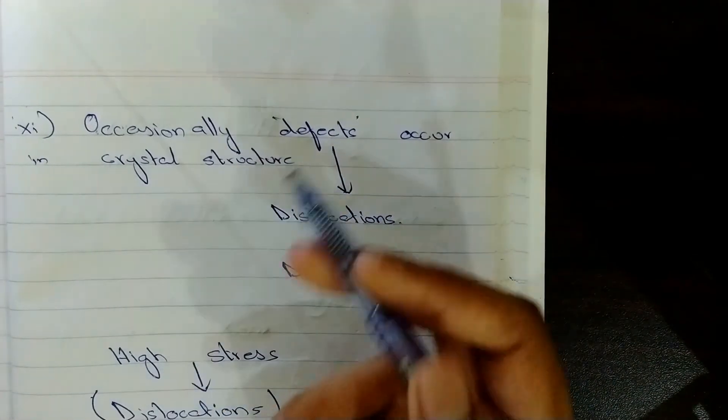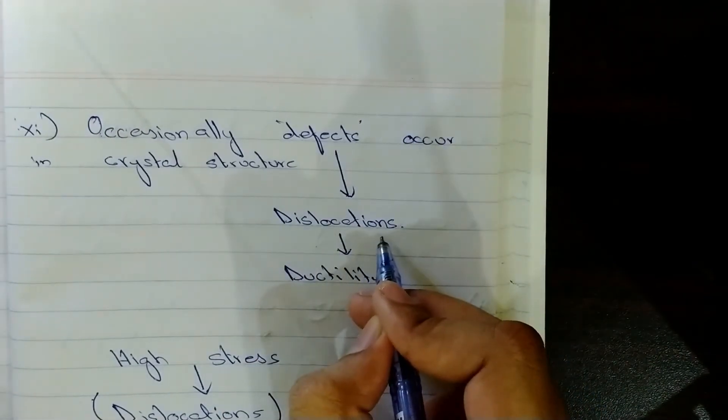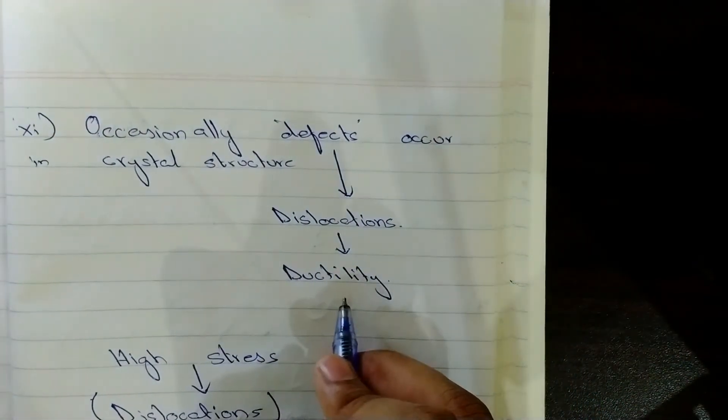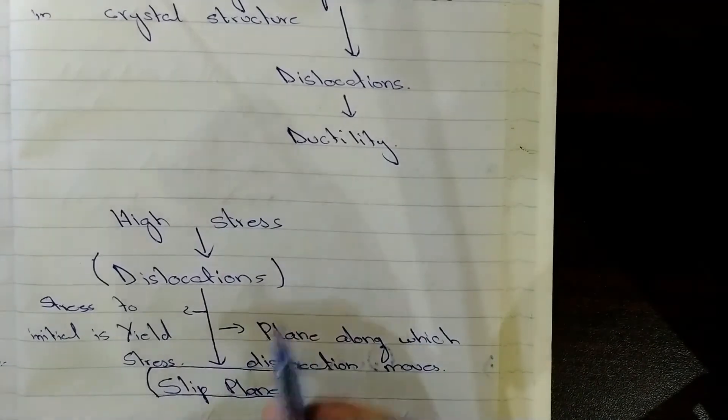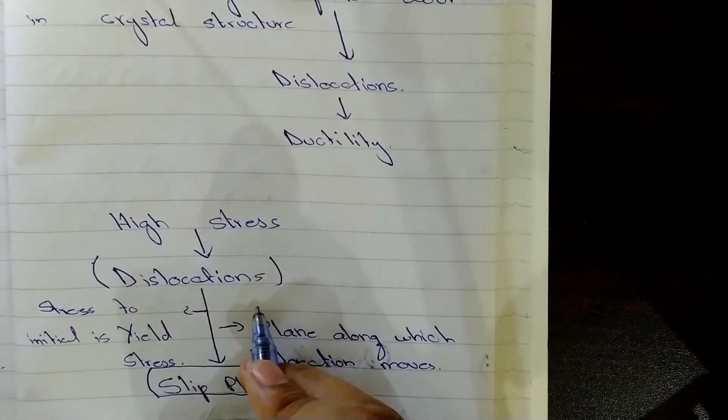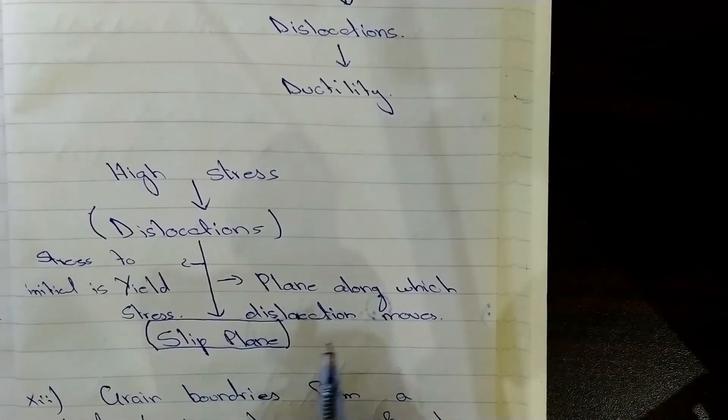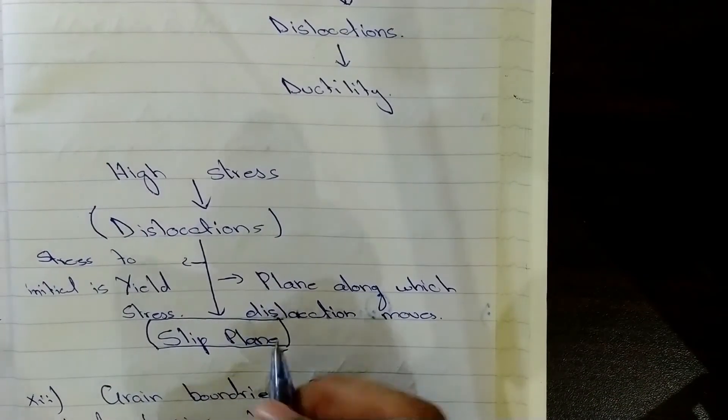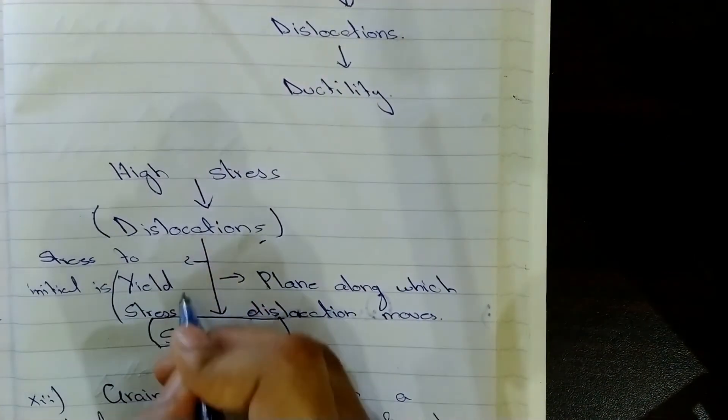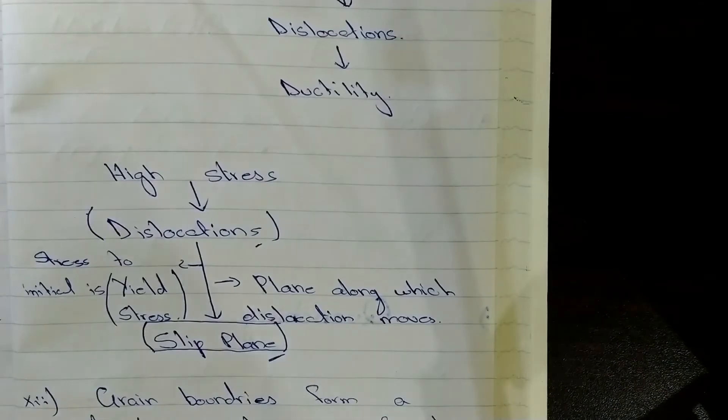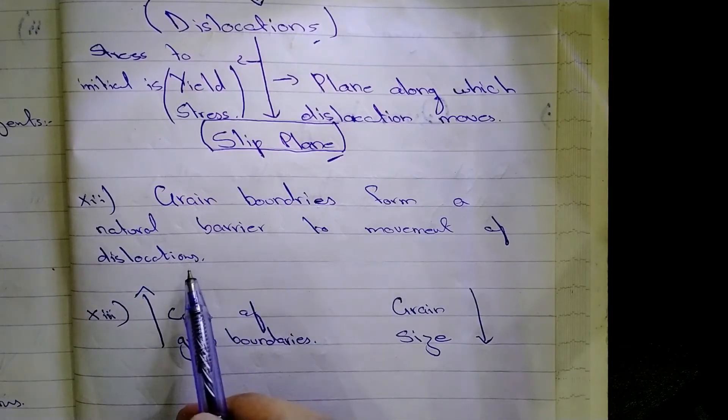In the crystal structure of the metals, occasionally defects occur. And these defects lead to dislocations, which affect the ductility of metal. Now, look at this chart. High stresses produce dislocations in a metal structure. And the plane along which dislocations move is called slip plane. And the stress required to initiate a dislocation is known as yield stress.